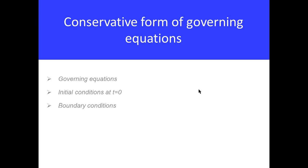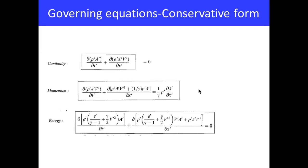Now considering the conservative form of the governing equations: the final equations are the conservative form for continuity, momentum, and energy. In these equations, everything is defined as a flux — for example, rho times area — so there is a time derivative of a flux rather than of the primitive variables. This is the basic difference between the conservative and non-conservative forms.